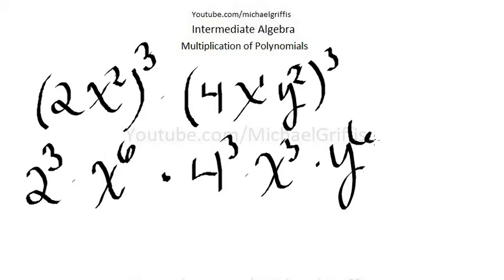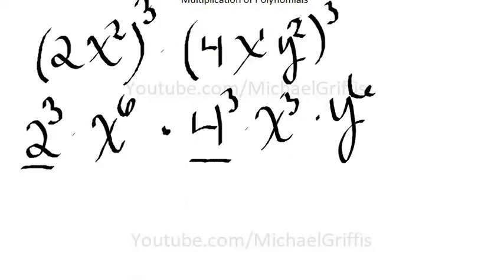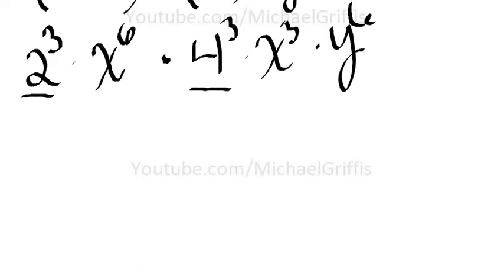Alright, now we collect up all our like terms. So we can multiply 2 to the third power times 4 to the third. And what you should get is 512.